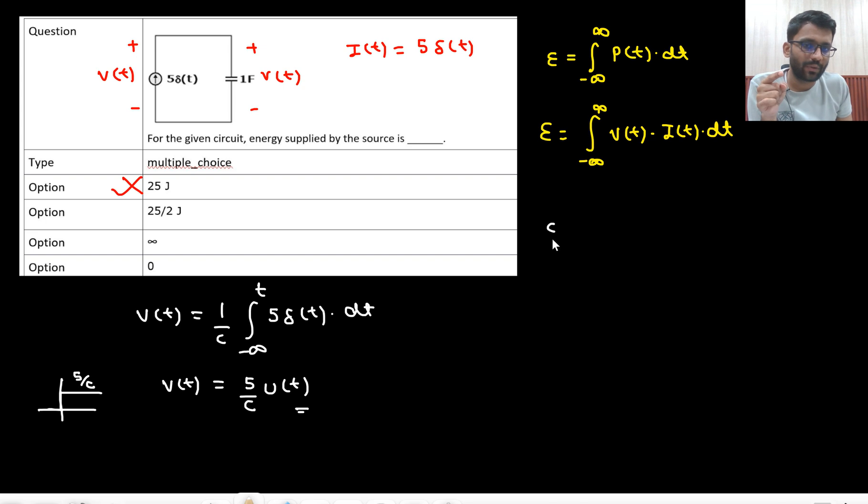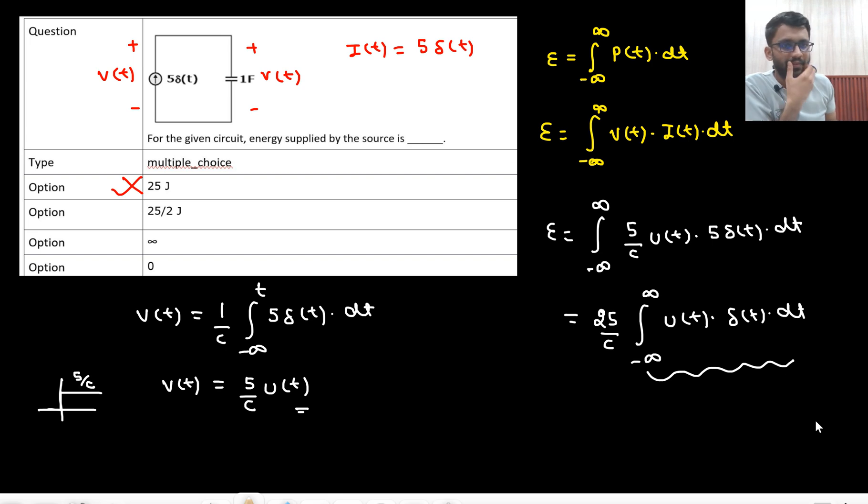Now in this expression you will put it. Minus infinity to infinity, 5 by C ut, and then what is your current, 5 delta T, into dt. So 25 by C will come outside. Minus infinity to infinity, ut into delta T dt.